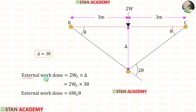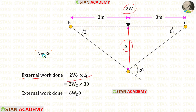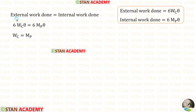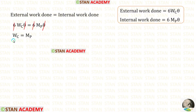Now let us find the external work done. We multiply the load 2W by the displacement delta. Substituting delta equals 3 theta, the external work done equals 6WC·theta. Equating external and internal work done, we can eliminate theta and 6, giving us the collapse load WC equal to MB.